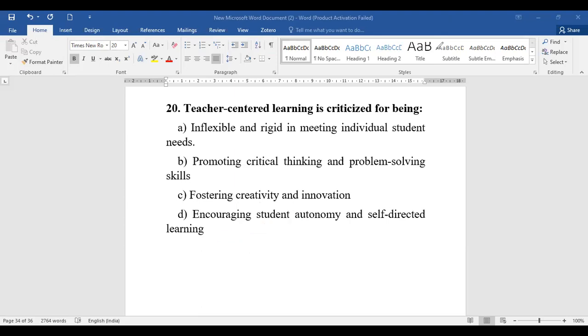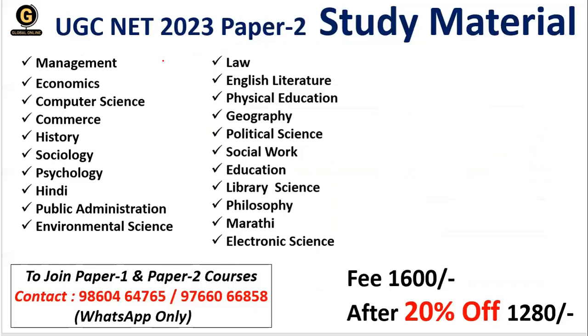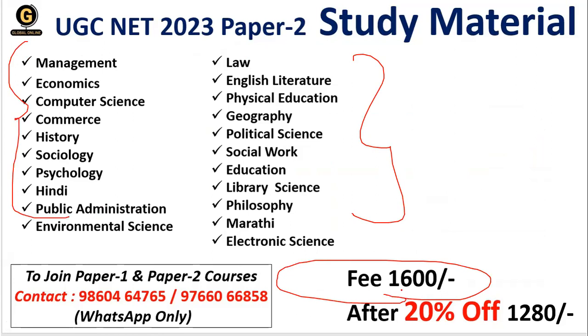That's all for today's session. For students looking for Paper 2 notes, Global Online has notes for various subjects visible on the screen. These Paper 2 notes consist of MCQs and study material, originally at Rs. 1600, but currently available at 20% off for Rs. 1280. Get in touch on the given numbers to get your copy. Based on today's analysis, expected questions will be considered for tomorrow's lecture. Thank you everyone, have a good day.